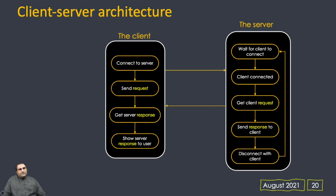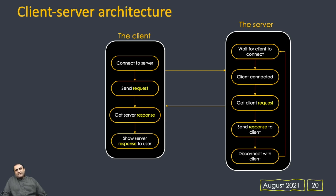On the client side, the client first initiates the communication by connecting to the server, sends the request, and waits for the server response. Once it gets the server response, it shows that response to the user. If it is a command-line program it shows data in the terminal, but mostly we recognize the client as a web browser. Web browsers are the web clients that connect to servers and display the information to us.